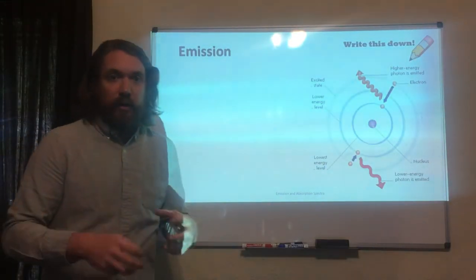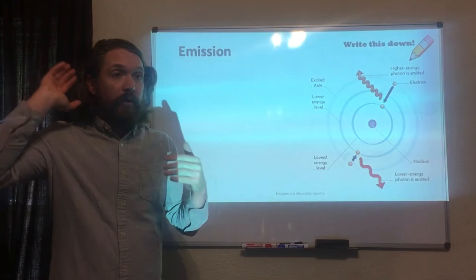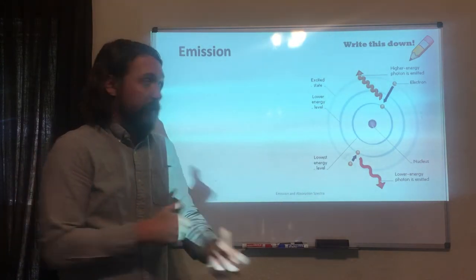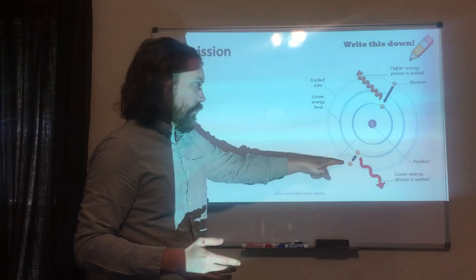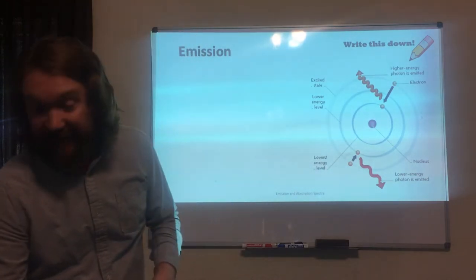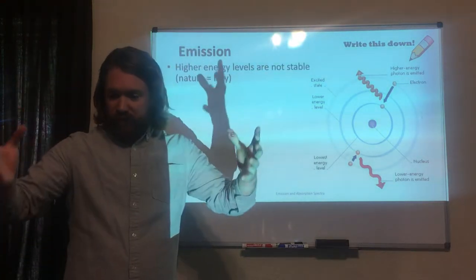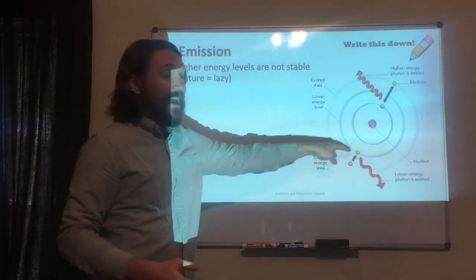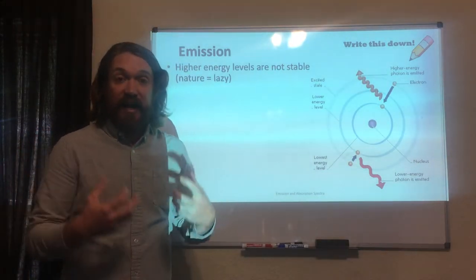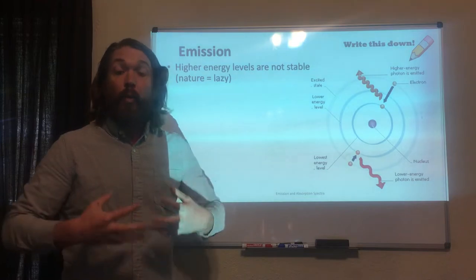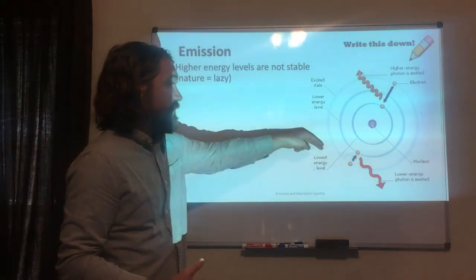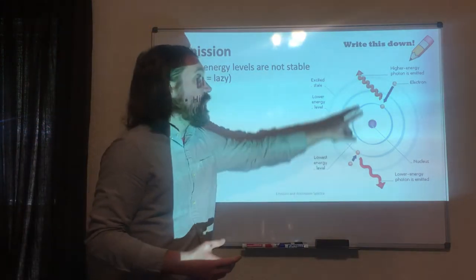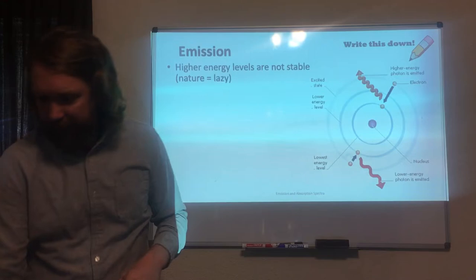If an electron absorbs energy, it gets more excited and goes up a level. The opposite is also true — electrons, like you and I, do not want to live at the top of the ladder. We go up there, do what we need to do, and need to come back down to our ground state. So when an electron wants to jump back down a level, it has to get rid of that energy. We call this emission — to emit means to send off. The only way the electron can get down a level is by getting rid of the light energy that got it excited in the first place — by spitting that light back out.